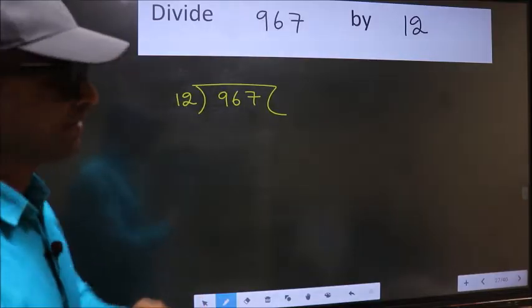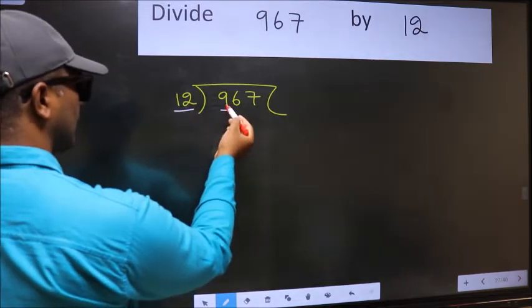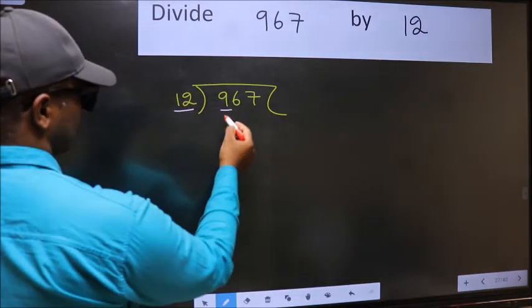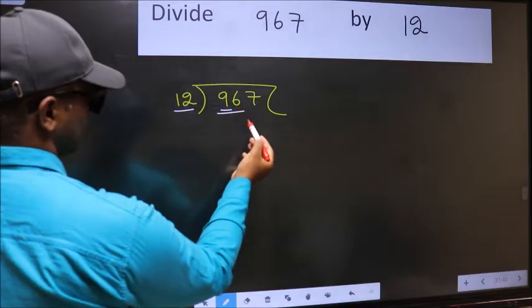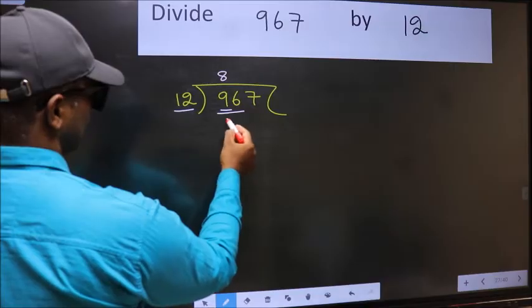Next, here we have 9 and here 12. 9 is smaller than 12, so we should take two numbers, 96. When do we get 96 in 12 table? 12 times 8 is 96.